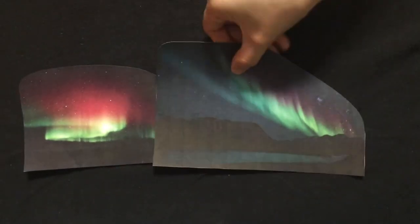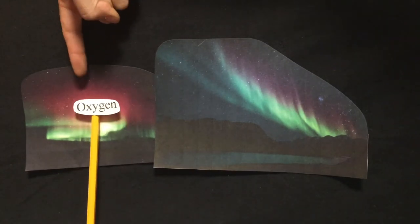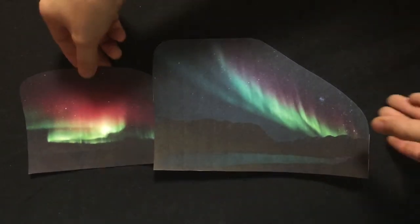Now, when viewing the aurora, a few different colors can be seen. Each gas in our atmosphere gives off its own color. Oxygen gives off green and red light, as nitrogen gives off blue and purple.